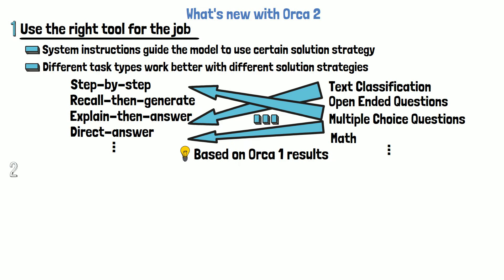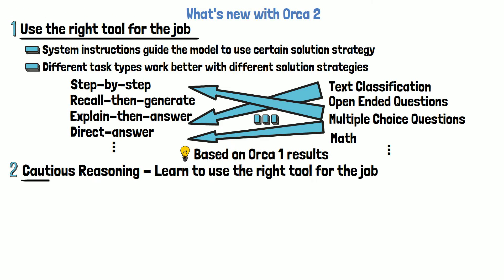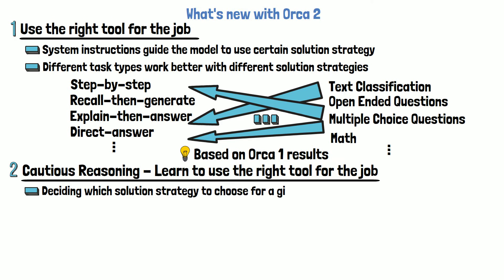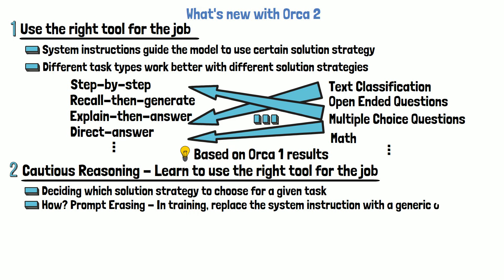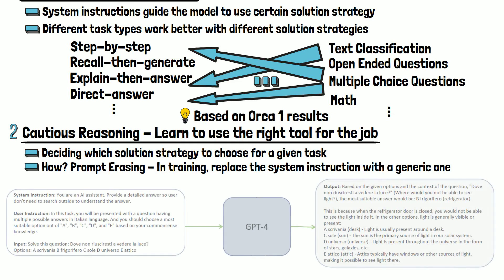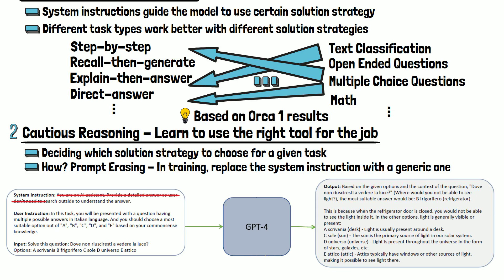The second improvement with Orca 2 is cautious reasoning, which means the model learns to use the right tool for the job — deciding which solution strategy to choose for a given task. Given a user instruction, Orca 2 as a cautious reasoner should be able to choose the proper reasoning technique even without a system instruction guiding that choice. This is achieved through prompt erasing. At training time, the system instructions in the input are replaced with a generic system instruction. By observing the response without the specific system instruction during training, Orca 2 learns to decide which solution strategy to use for each task type.